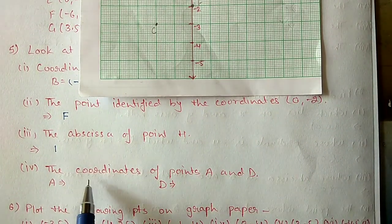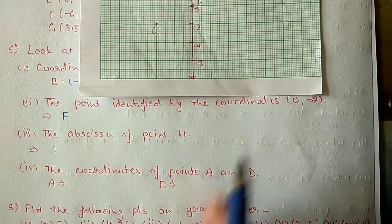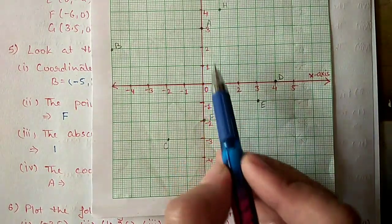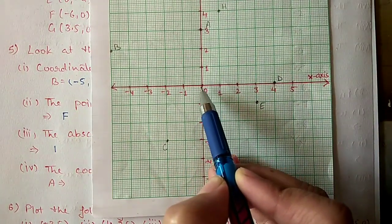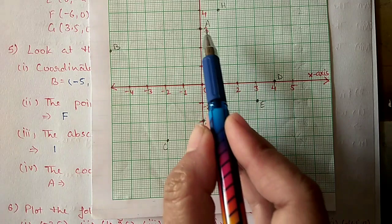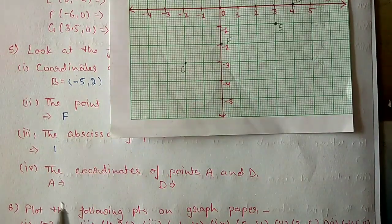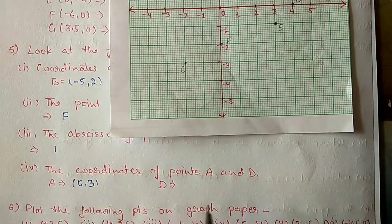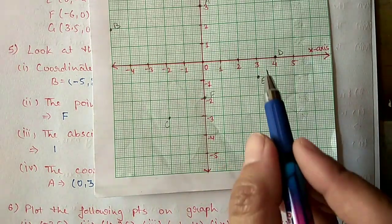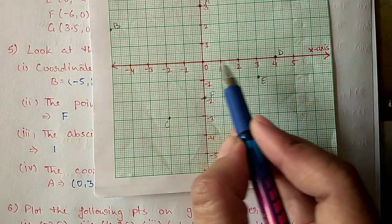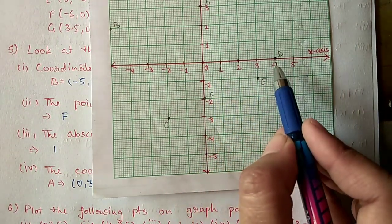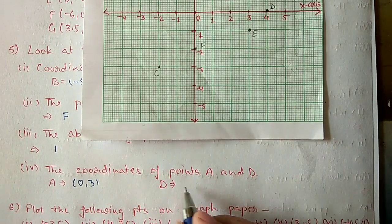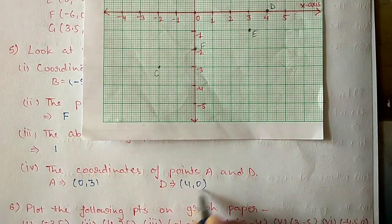The coordinates of points A and D: for point A, x-axis value is 0 and y-axis value is 3, so A is (0, 3). For point D, x-axis value is 4 and y-axis value is 0, so D is (4, 0).